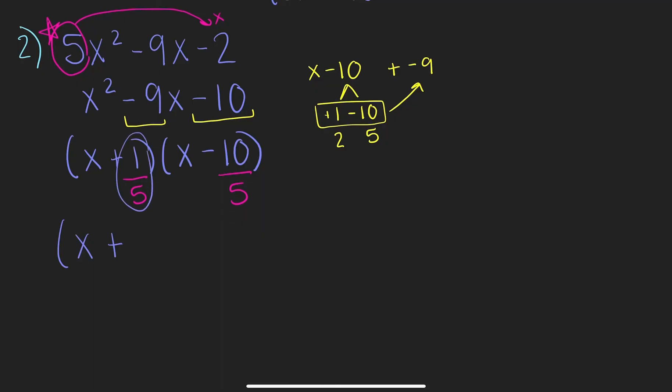This can't simplify any further. It's just 1 fifth. x minus 10 divided by 5 is just 2. And now we're at our last step. The slide.